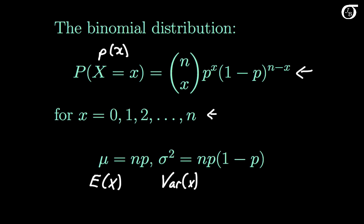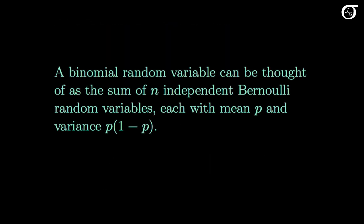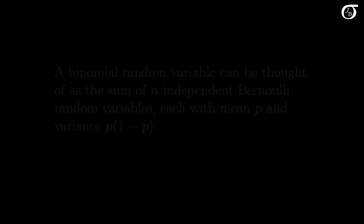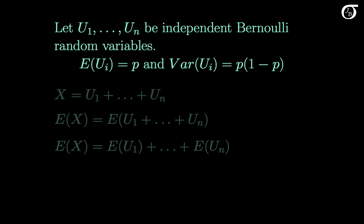The easy way assumes that we already know the mean and variance of a Bernoulli random variable, and the hard way starts from scratch. A binomial random variable can be thought of as the sum of n independent Bernoulli random variables, each with mean p and variance p times (1-p). The mean and variance of a Bernoulli random variable is not too hard to derive, and I do that in another video. If we let u1 through un be independent Bernoulli random variables, where the mean or expectation for each of them is p, and the variance for each of them is p(1-p).